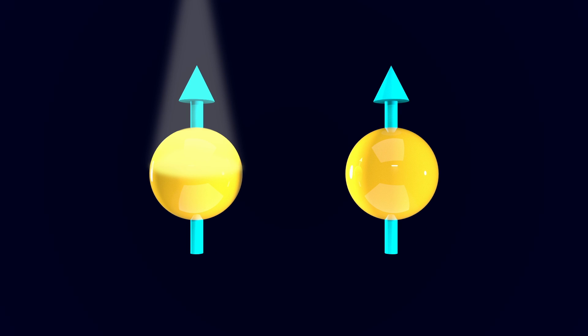So if we know which relationship the spins have before we entangle them, when we measure the spin of one particle, we automatically know what the spin of the other particle is.